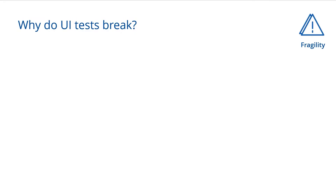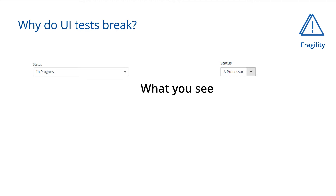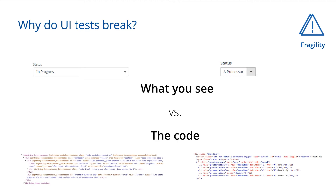The first problem around fragility: when you ask a human tester to interact with the status dropdown and select 'in progress,' they can perform that instruction on the left dropdown just as well as on the right. But at the code level, this code can change over time drastically — from one technology to another, or just a small change where identifiers change, the DOM structure changes, and so on.